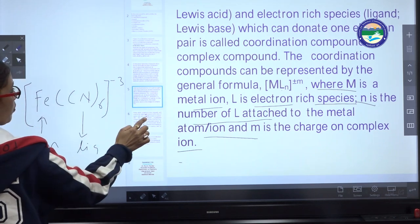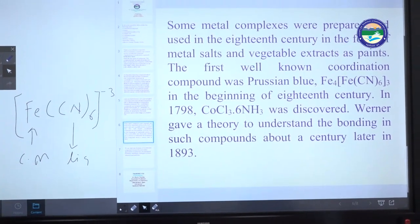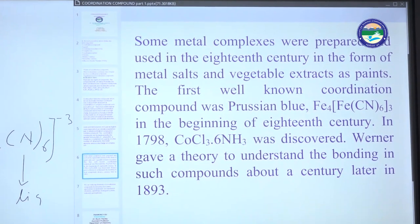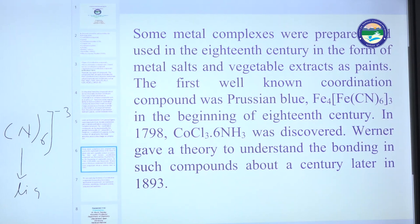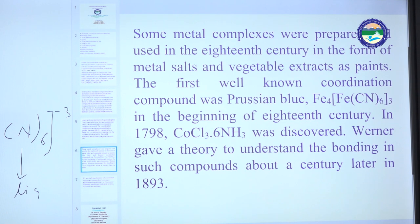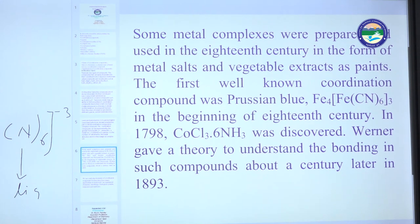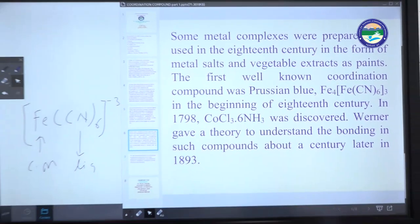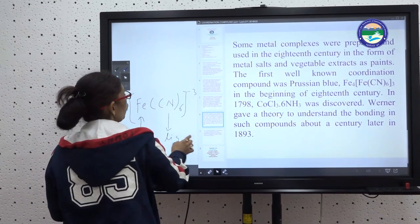Some metal complexes were prepared and used as early as the 18th century in the form of metal salts and vegetable extracts as paint. The first well-known coordination compound is Prussian Blue. In 1798, CoCl₃·6H₂O was discovered, and later Werner gave a theory to explain the bonding in such complexes in 1893 — this is known as Werner's Theory.